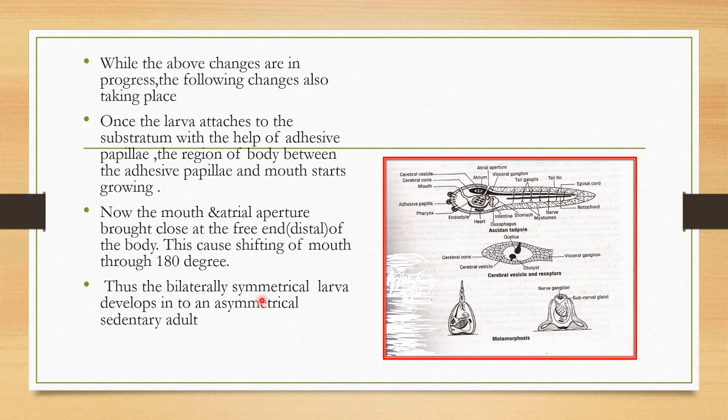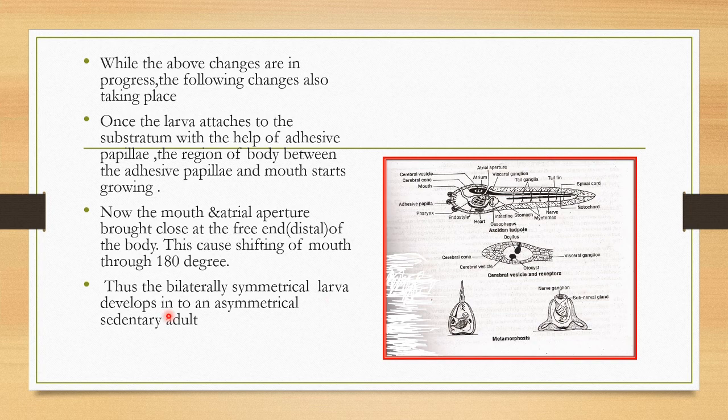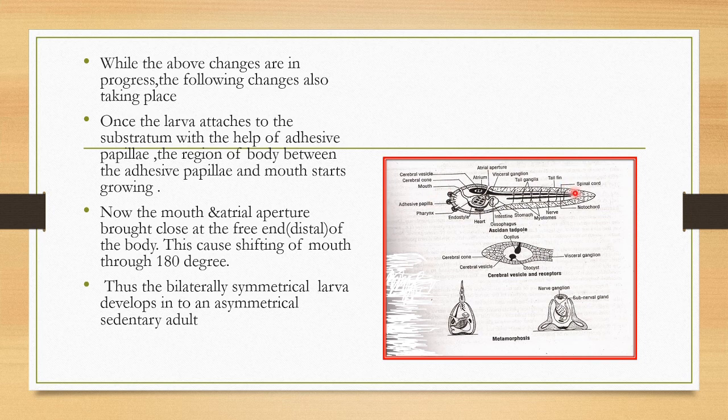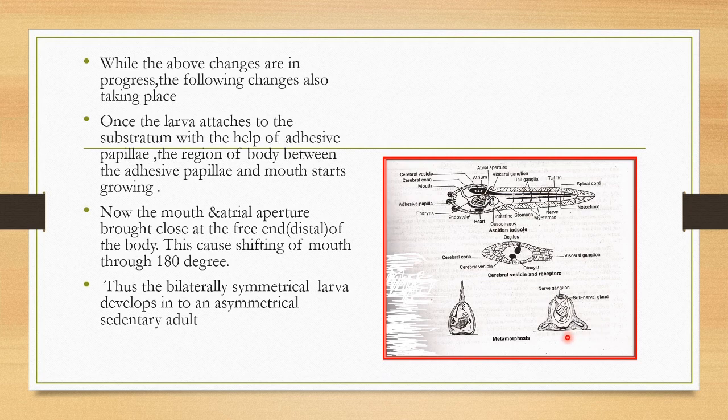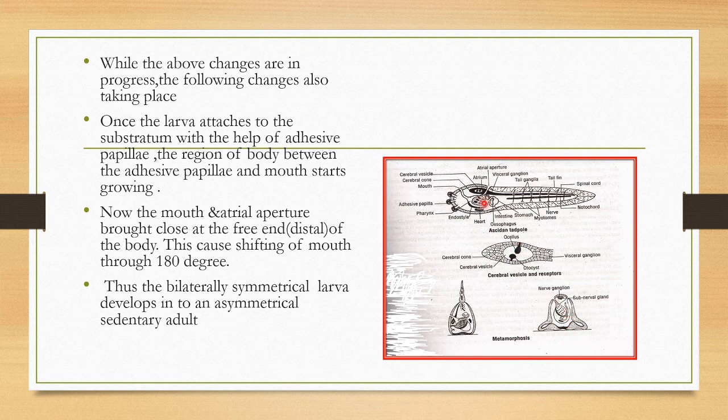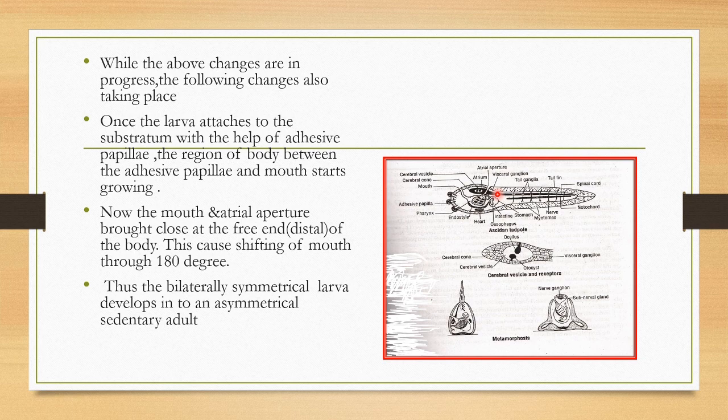Thus, the bilaterally symmetrical larva develops into an asymmetrical sedentary adult. So this larva, ascidian tadpole, free-swimming ascidian tadpole, finally becomes a sedentary, asymmetrical adult by losing all of its major organs and organ systems. So this is called retrogressive metamorphosis.